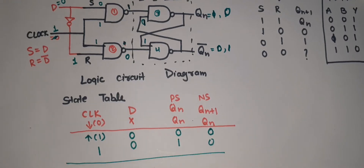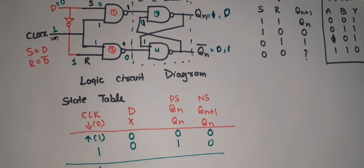Now the next case: D equals one, clock equals one. Present state can be zero or one — let's solve it.